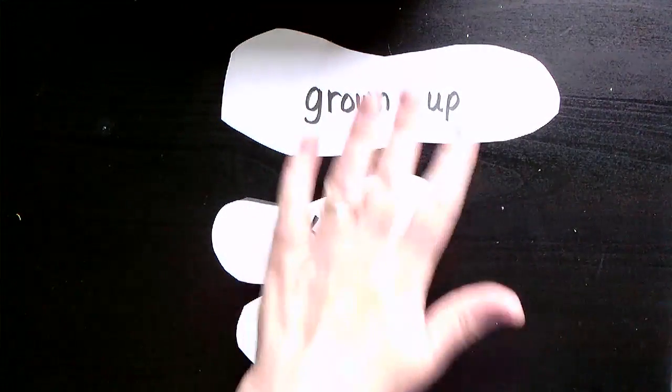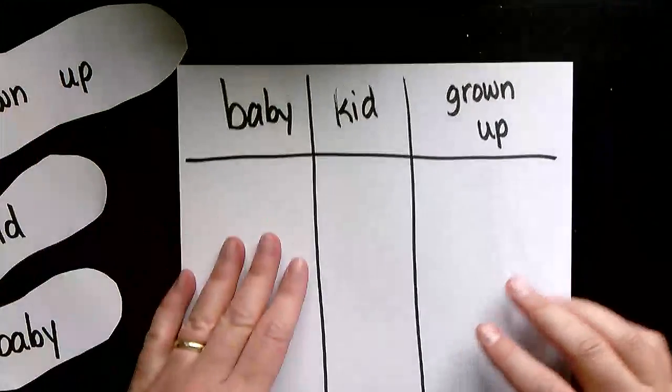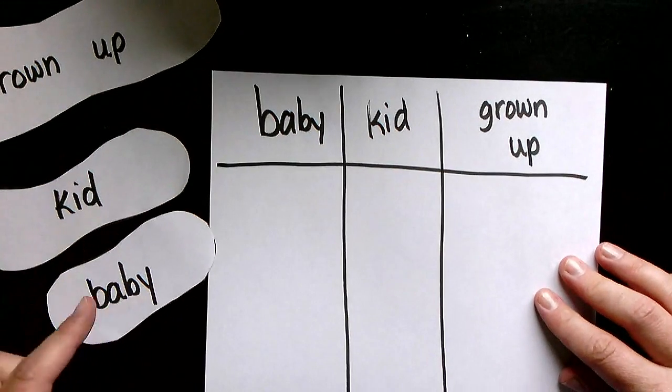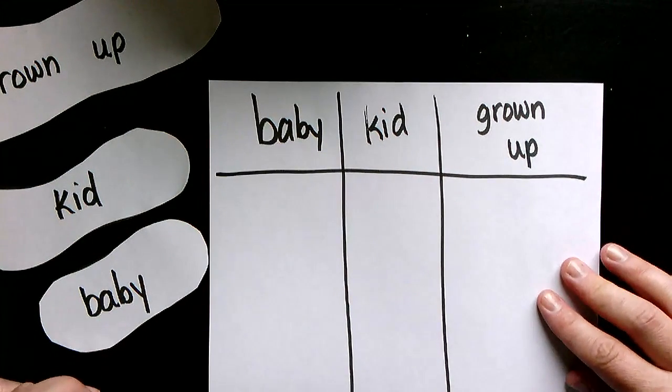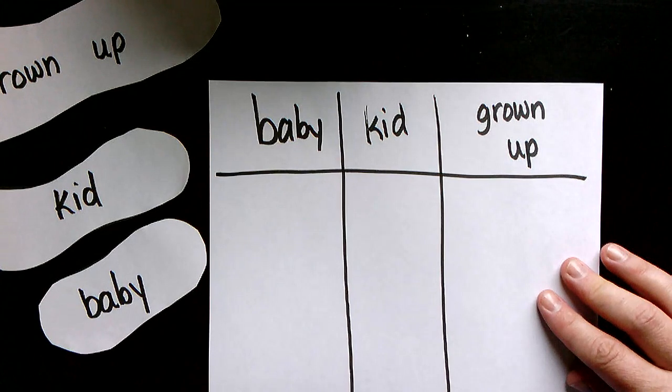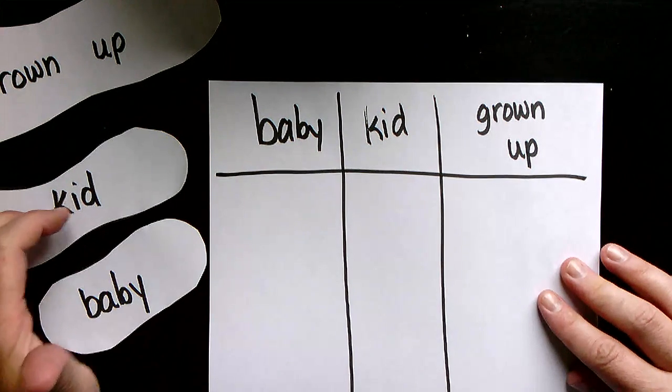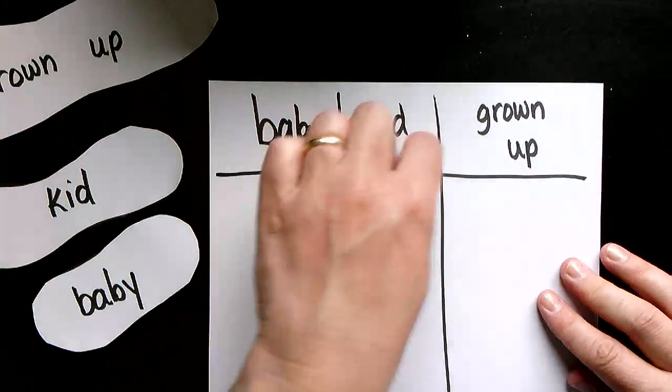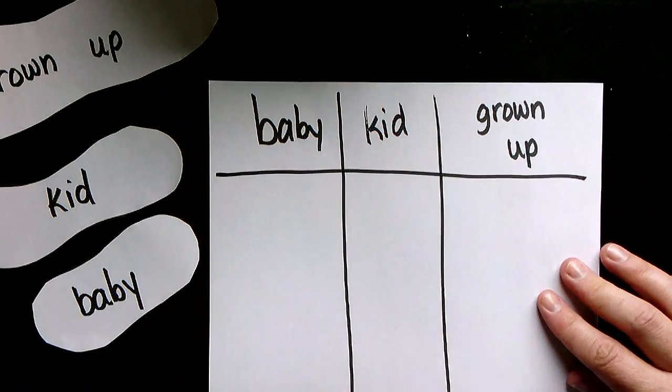The next thing we're going to do is we are going to make a little chart. And on our chart, we're going to write the same words. You can label, I want you to label the shoes that you cut out. So let's say you have a baby brother, a sister, maybe your shoe, and then maybe your mom or dad's shoe. So go ahead, label them, and then put the same names over here. So I have baby, kid, and grown-up.